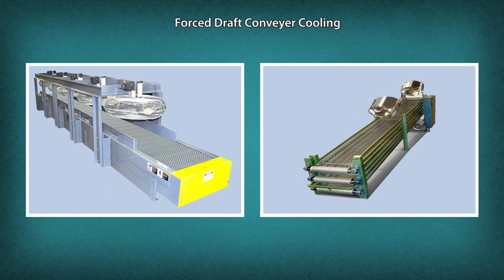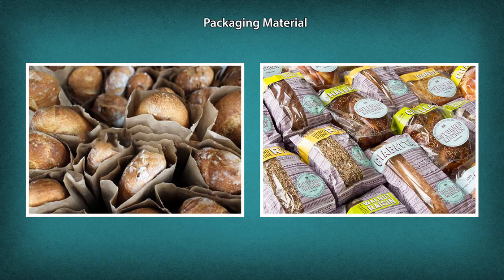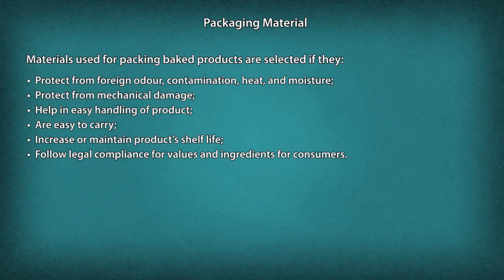Forced draft cooling conveyor: filtered air is blown against the direction of the product coming out of the oven on the cooling conveyor, ensuring faster cooling than the atmospheric type. Packaging materials protect and handle the delivery and preservation of finished goods. Materials used for packing baked products are selected if they protect from foreign odour, contamination, heat and moisture, protect from mechanical damage, help in easy handling, are easy to carry, and increase or maintain product shelf life.